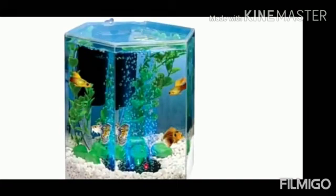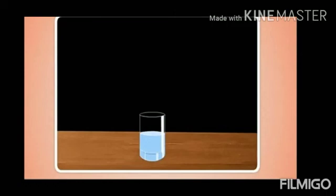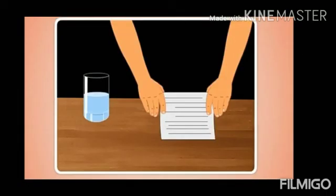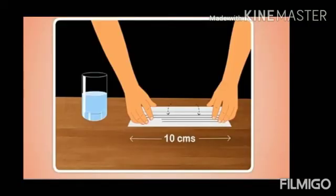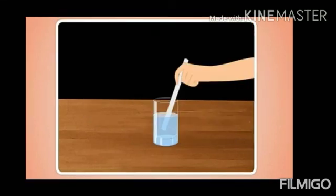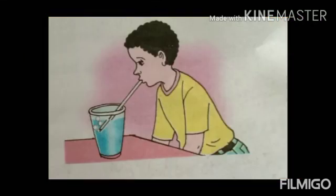My dear students, now we are going to try a small activity. Take half a glass of clean water. Take a small piece of newspaper sheet and roll it to make a straw, about 10 cm long. Dip one end of the straw into the water and through the other end, blow into it with your mouth. What do you see? Bubbles rise up in the water. What does this tell us? You blew air into the water, and this air rose up and escaped in the form of bubbles.